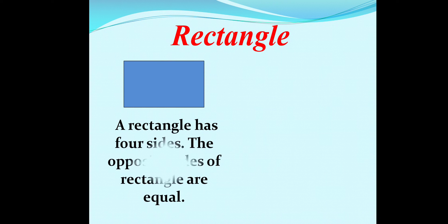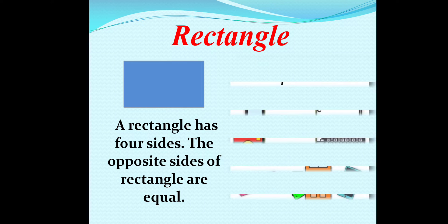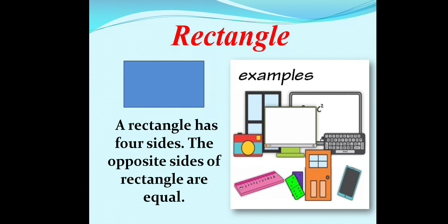Now, let's next one is rectangle. This shape is called a rectangle. A rectangle has four sides. The opposite sides of rectangle are equal. Now, we will go for some examples. Observe this picture carefully: door, blackboard, monitor, camera, cell phone, keyboard, piano.